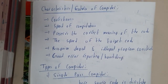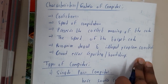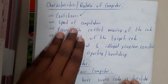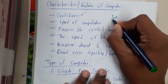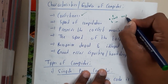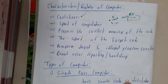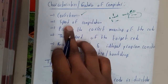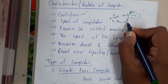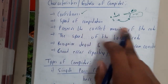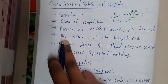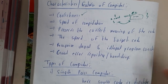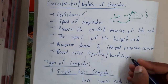Now let us go through some characteristics of a compiler. First is correctness — whatever you gave as input, for example a code for adding two numbers, when converted to machine code the machine code should also perform the same operation. That is correctness. Similarly, speed of compilation — this conversion should be fast. Then, preservation of the correct meaning of the code. Speed of the target code — the generated target code should also execute faster. And finally, recognizing legal and illegal program constructs and good error reporting and handling.